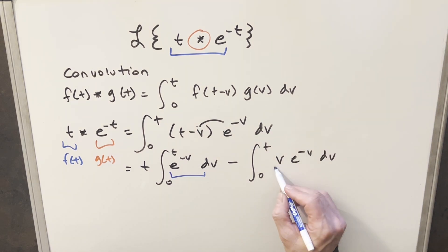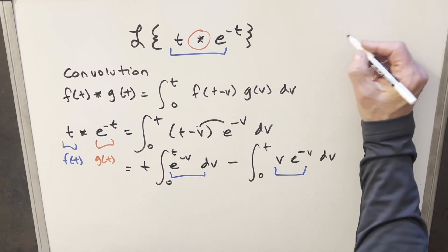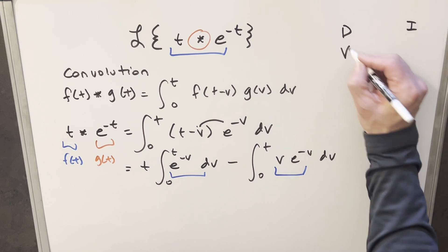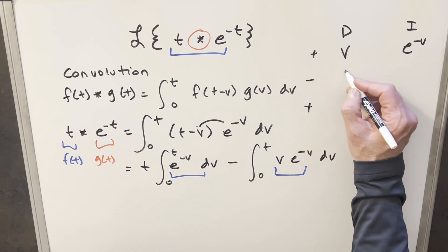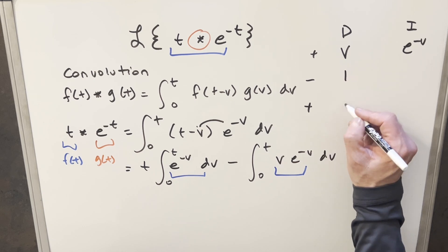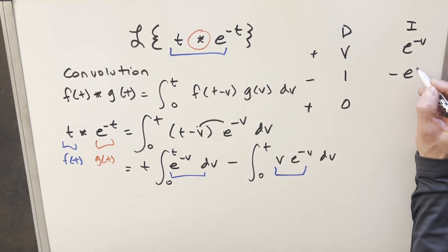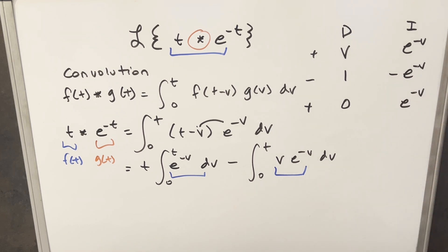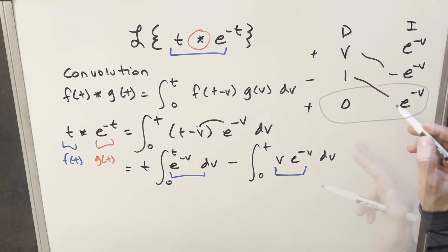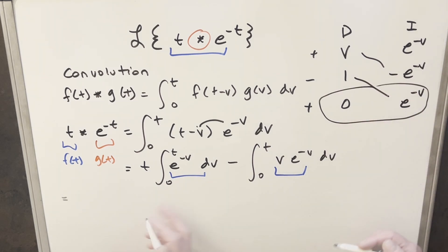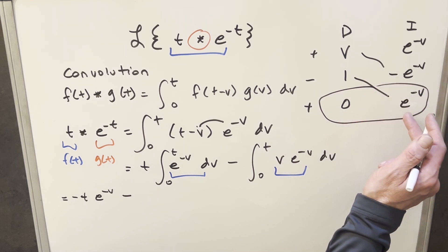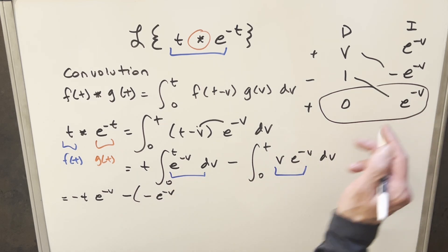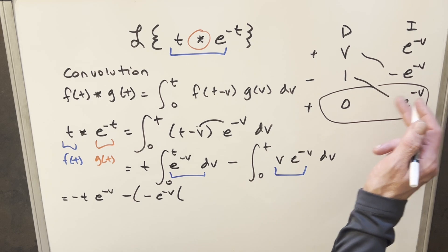The first integral is easy, and the second one requires integration by parts. Let's do integration by parts quickly using the DI method. I'm going to differentiate v and integrate e to the minus v. We create three rows: differentiate v to 1, then to 0. Integrating e to the minus v gives minus e to the minus v, and integrating again gives e to the minus v. We read the solution off the diagonals. We factor out minus e to the minus v, since it appears in both terms, leaving v plus 1.